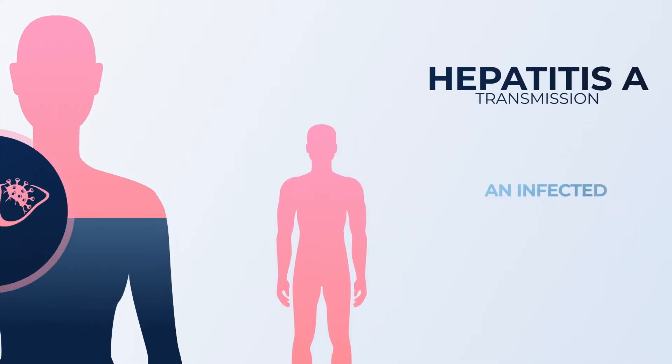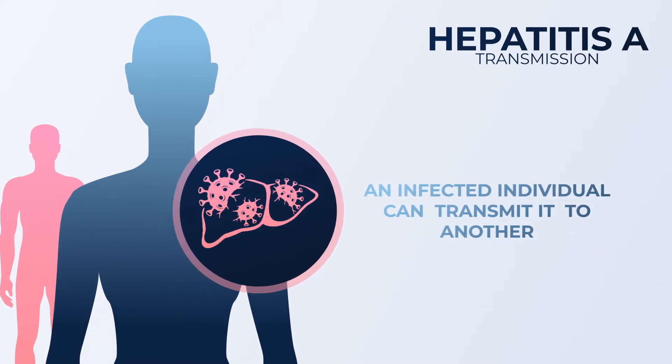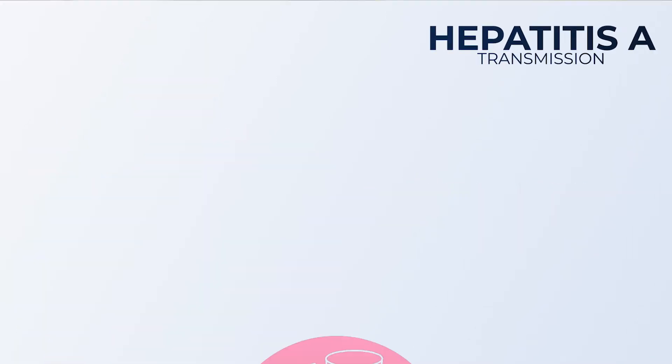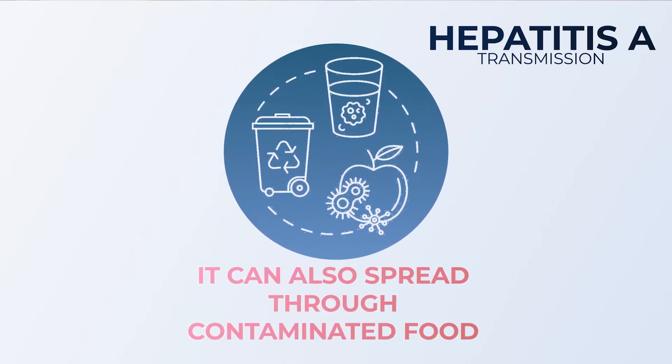Hepatitis A is caused by the hepatitis A virus, which is transmitted from one person to another. It is also transmitted through contaminated food and water. So if a child is not careful at home or at school — takes food from vendors, doesn't wash hands — then he may get the virus and become infected.